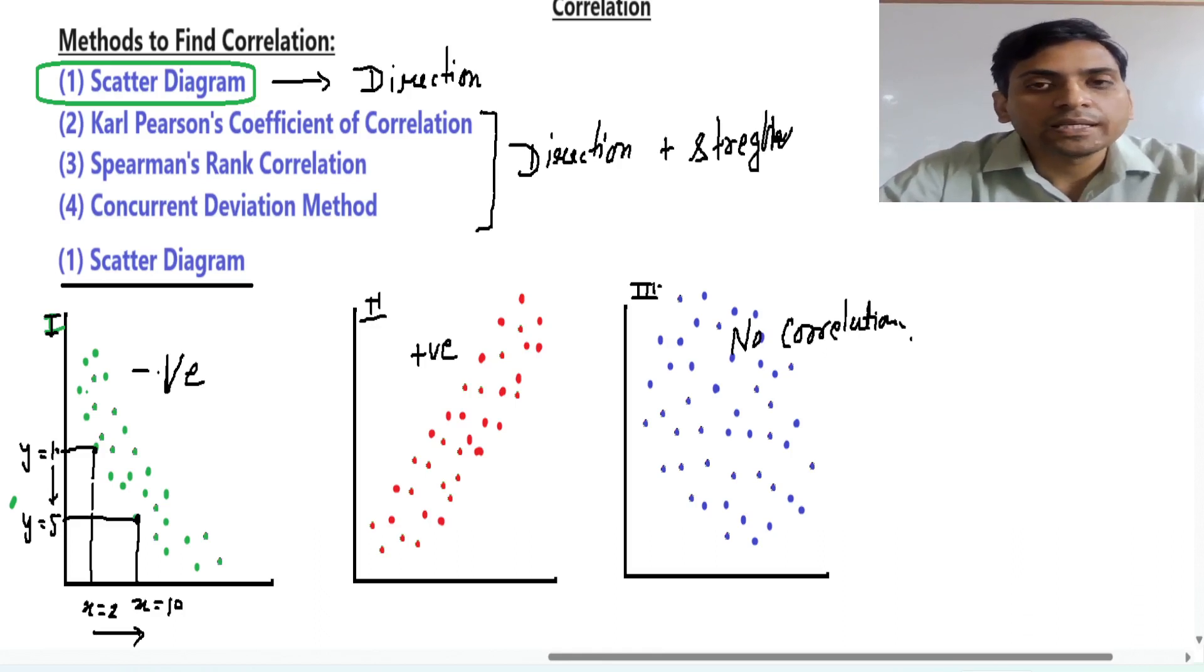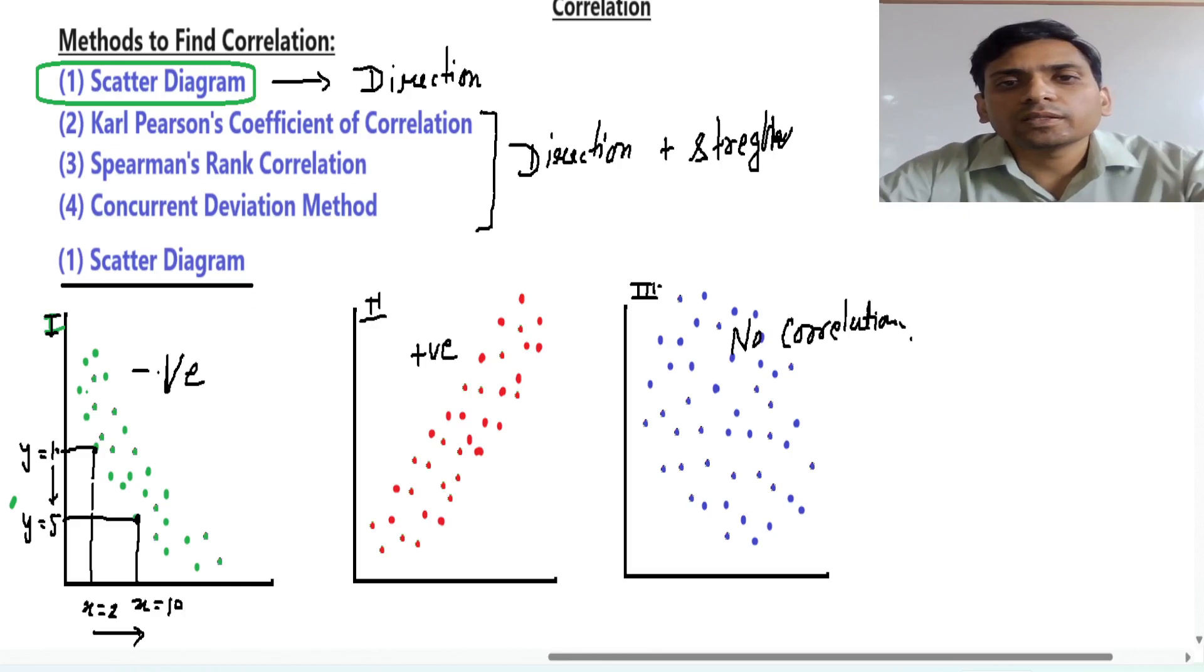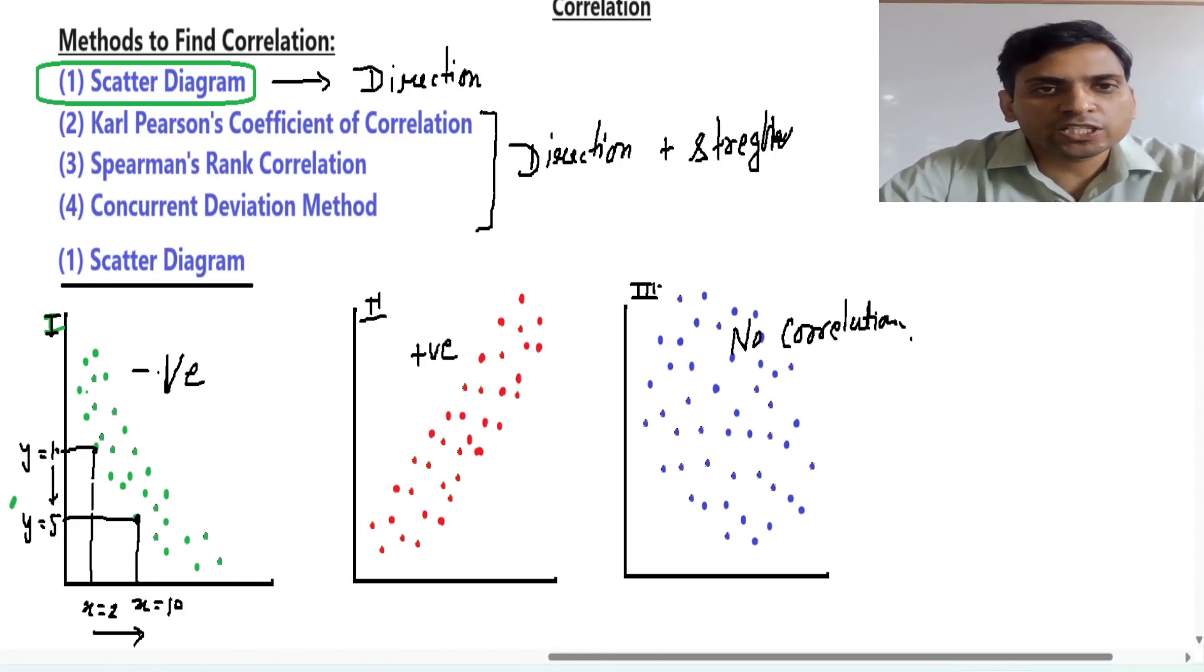Direction means positive or negative. Strength means just like in your class, some classmates are your close friends and some classmates are just friends. So relationship with close friend is good, this is plus 1 we can say, and who are just friends, relationship with them is maybe 0.5 or 0.4, so this is not as good a relationship. So this is the strength of relationship. From these three methods we will find direction as well as strength, and from scatter diagram we will see only direction.